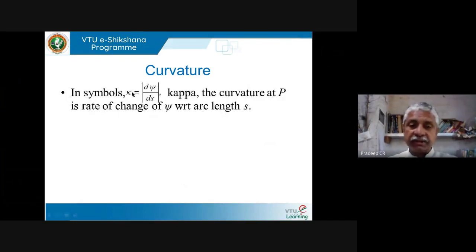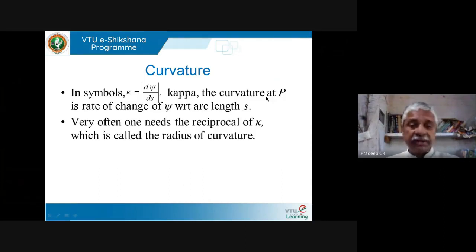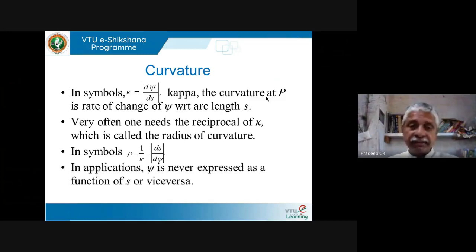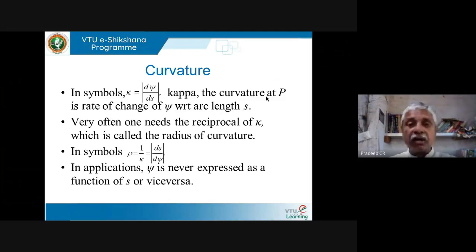In symbols, kappa is the curvature; dψ/ds is called the curvature of the curve at that point. Very often we need the reciprocal of curvature, which is called the radius of curvature. By definition, 1/ρ = 1/κ = |dψ/ds|. But in real life we rarely get a relation between s and ψ — we get a relation between y and x, or between r and θ — rarely s and ψ.